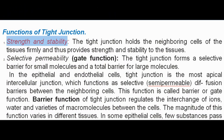Functions of tight junction — Strength and stability: The tight junction holds the neighboring cells of the tissues firmly and thus provides strength and stability to the tissues. Selective permeability / gate function: The tight junction forms a selective barrier for small molecules and a total barrier for large molecules. In epithelial and endothelial cells, the tight junction is the most apical intercellular junction, which functions as a selective, semi-permeable diffusion barrier between neighboring cells. This function is called the barrier or gate function.